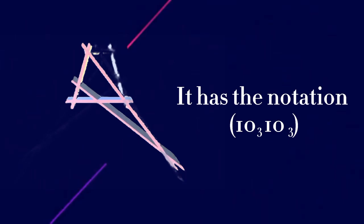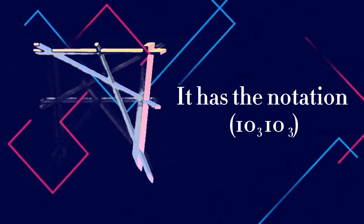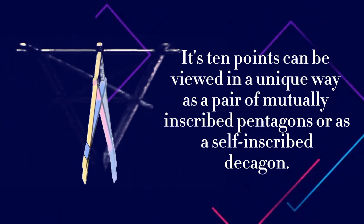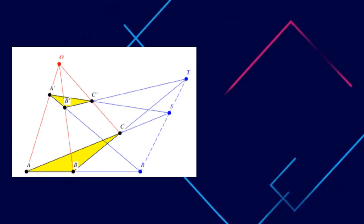10₃ 10₃, meaning that each of its ten points is incident to three lines and each of its ten lines is incident to three points. It can be viewed in a unique way as a pair of mutually inscribed pentagons or as a self-inscribed decagon.